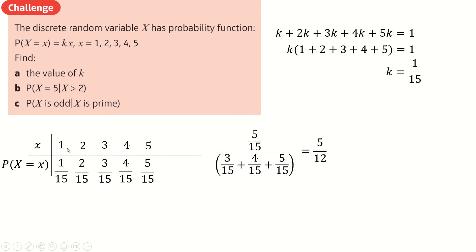And then probability of X is odd given X is prime. But the odd ones are... Well, firstly, we should think about the prime ones because the prime ones are 2, 3, and 5. And of those, the odd ones are 3 and 5. So it's going to be this plus this over this, this, and this. Like so.